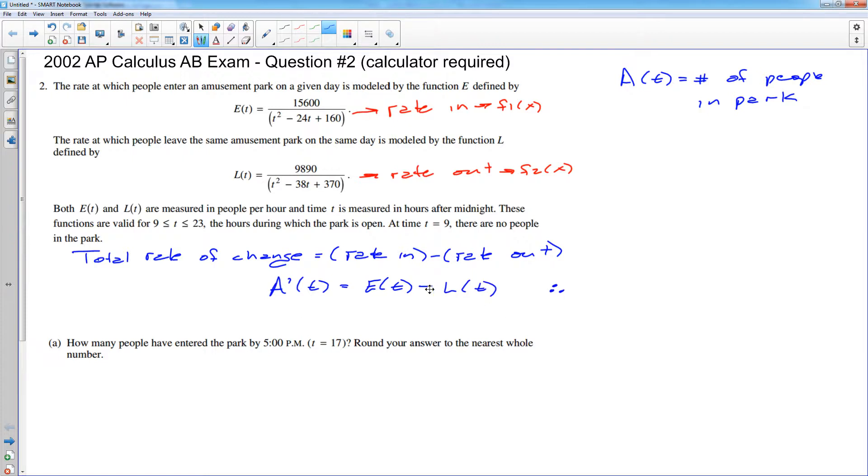Which means that A of T, if I wanted the actual number of people in the park, it would be the anti-derivative of that. Now there will be some slight tweaks to this, because I haven't factored in an initial condition. But that generally is the overall rate of change for the number of people in the park, and the actual number of people in the park would be the anti-derivative of the rate of change.